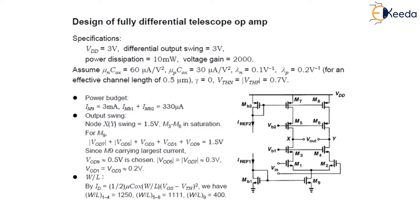Now, the figure shows the op-amp topology along with two current mirrors. This value of ID9 is 3 milliamperes whereas ID1 and ID2 they both have a current term as 330 microamperes.